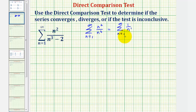So because we're going to be comparing this series to a diverging series, if we can show the terms of this series are greater than or equal to the terms of this known diverging series, then the given series also diverges.